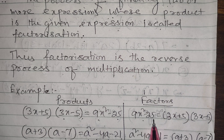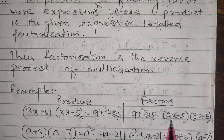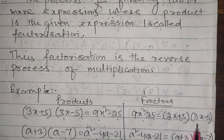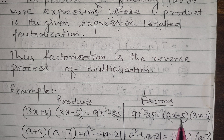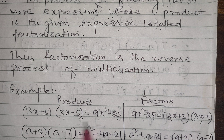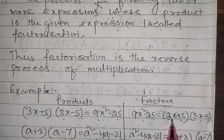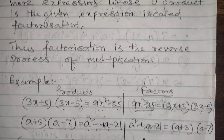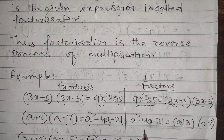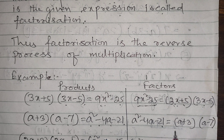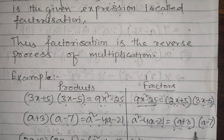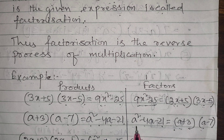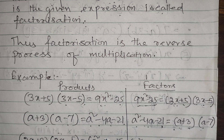Going the other way: 9x² - 25 = (3x+5)(3x-5), so 3x+5 and 3x-5 are the factors of 9x² - 25. Similarly, a² - 4a - 21 = (a+3)(a-7), so a+3 and a-7 are the factors. And 6x² - x - 15 is factorized the same way.